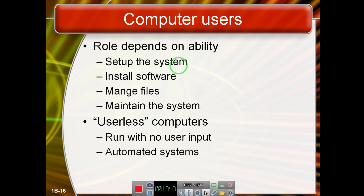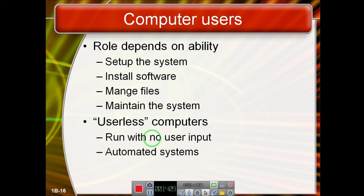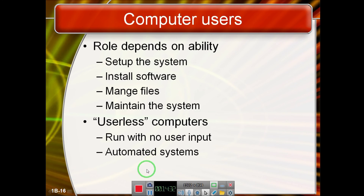A computer user could be a human who sets up the system, installs software, manages files, and maintains the system. A system could also be termed a userless system — meaning an autonomous or automated system that does not need a user and runs on its own. Examples include surveillance systems, some industrial systems, and air conditioning on auto mode. Autopilot systems are userless systems — they are programmed and trained to operate without user commands.